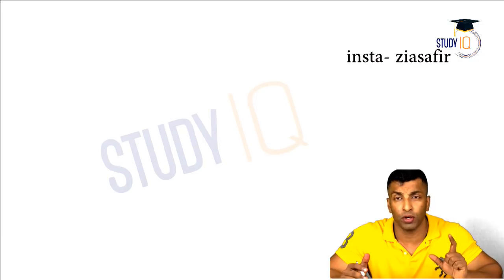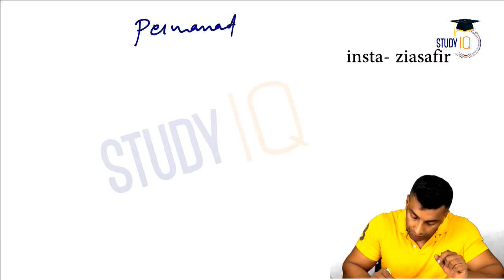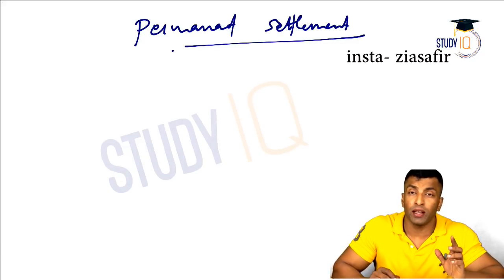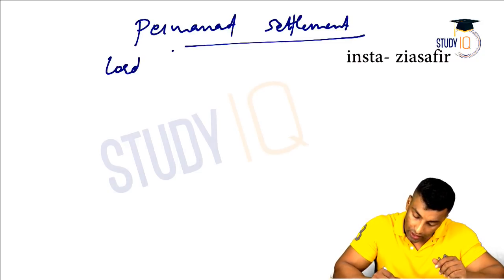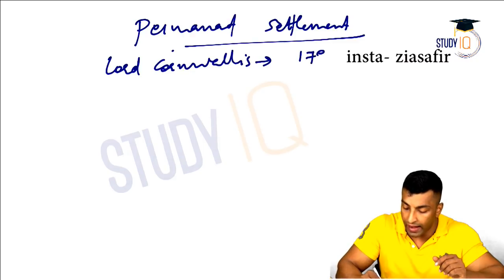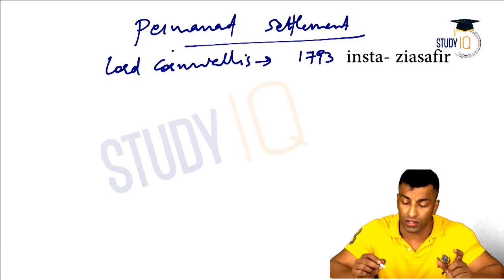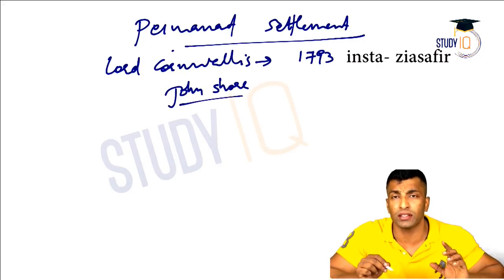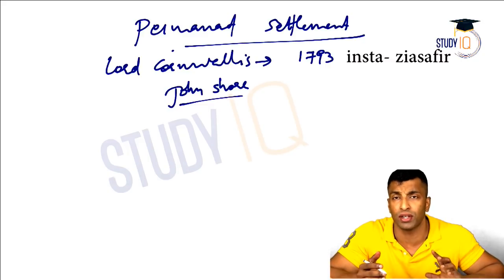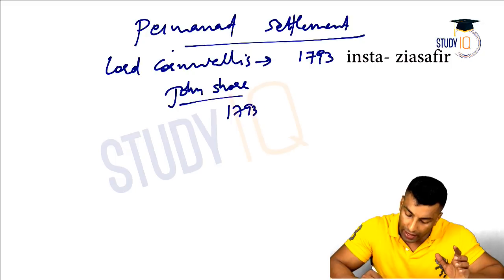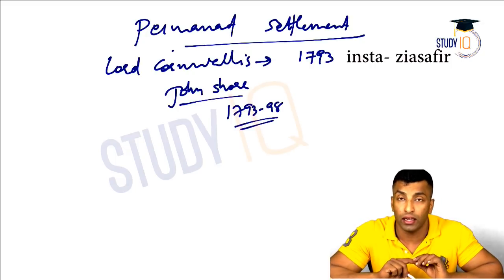We will start with permanent settlement. It was introduced by Lord Cornwallis in 1793. Along with Lord Cornwallis, the deputy was John Shore, who is an important name because he is going to be the next Governor General after Lord Cornwallis, from 1793 to 1798.